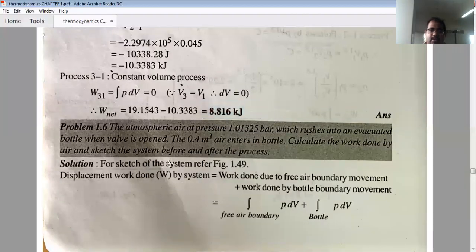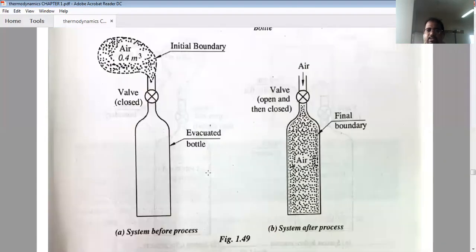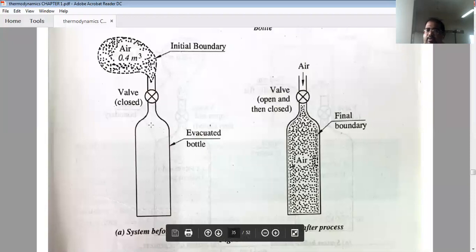Next question says that atmospheric air at pressure 1.01325 bar rushes into an evacuated bottle when valve is open. The 0.4 meter cube air enters into the bottle. Calculate the work done by air and sketch the system before and after the process. This is the system where the air is fully evacuated. There is a vacuum inside. Then I opened the valve and air enters into the bottle.